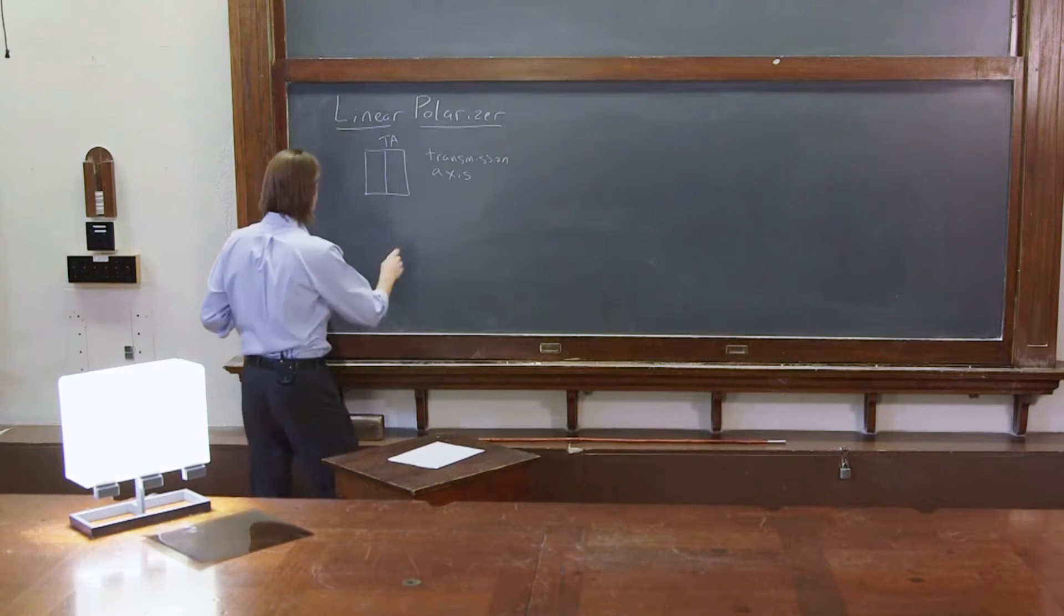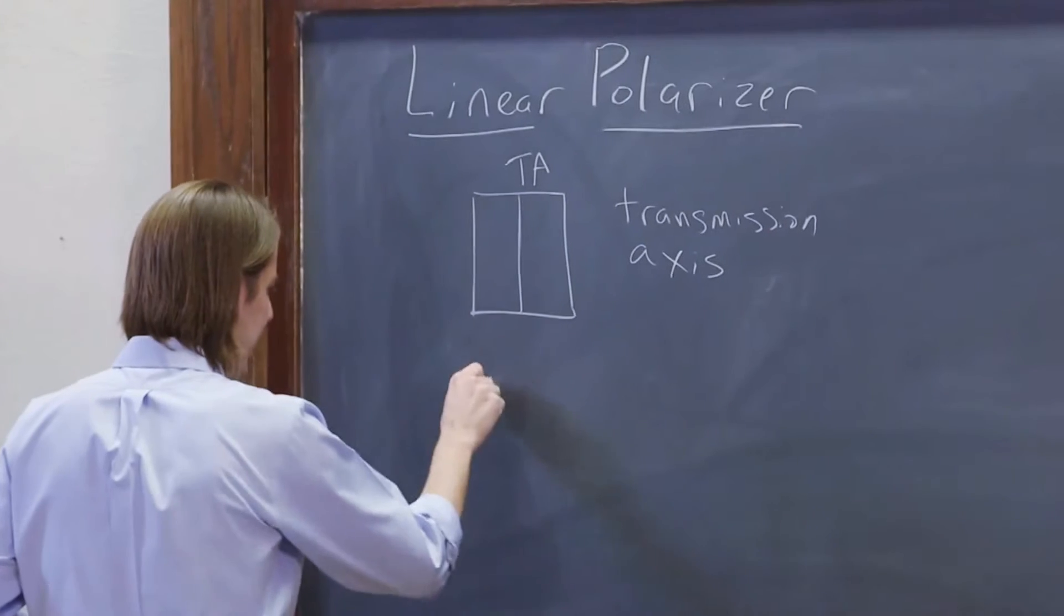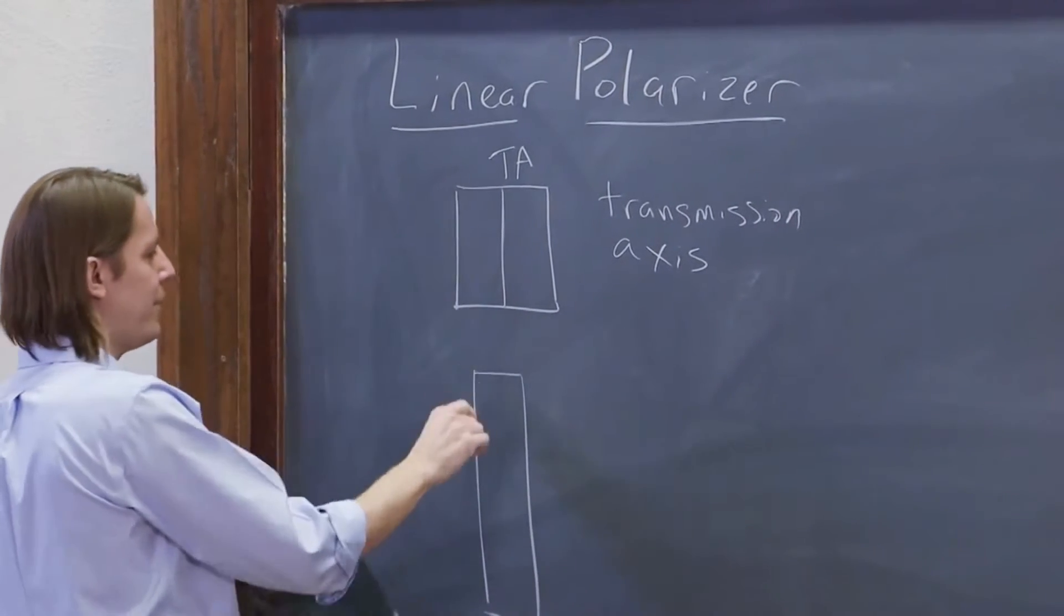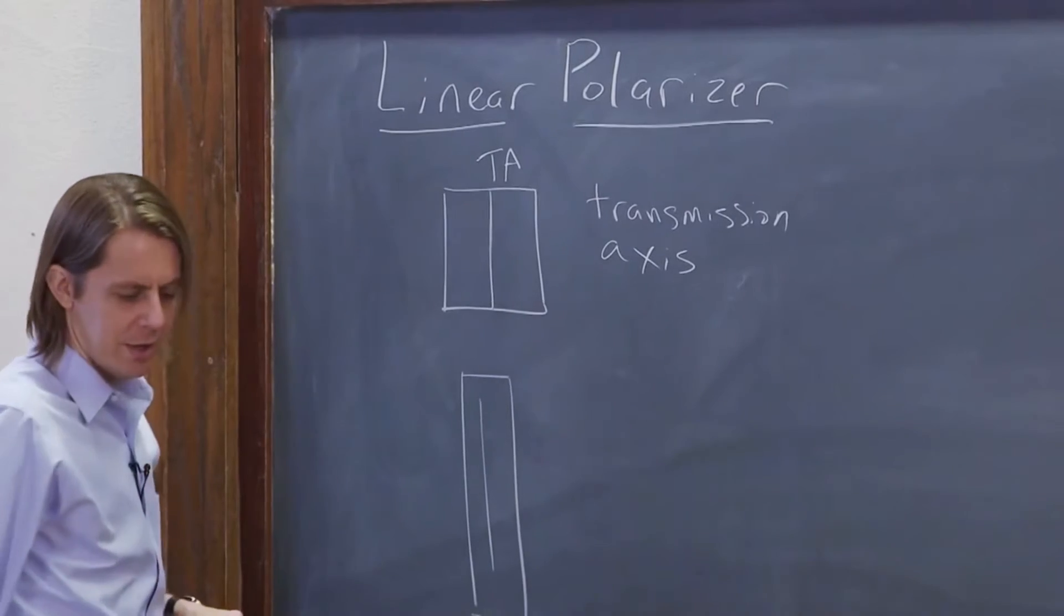And then we can think about the light from the side and how we will characterize how much light gets through. So now we're looking from the side, but I'll go ahead and draw the TA like that.